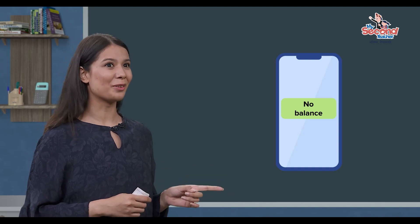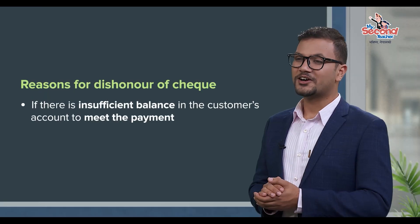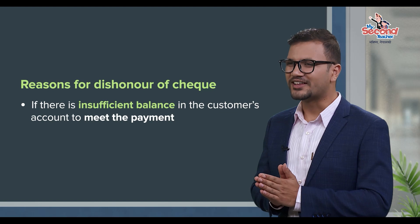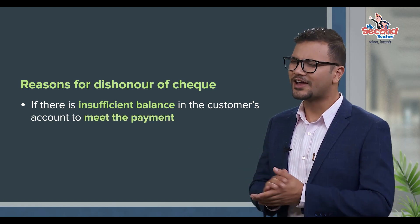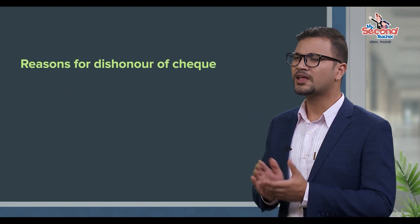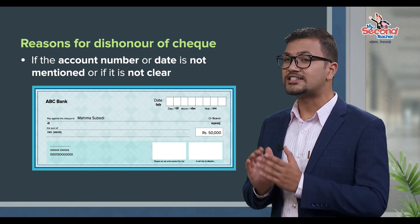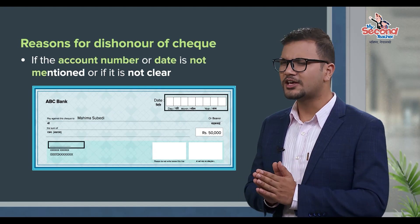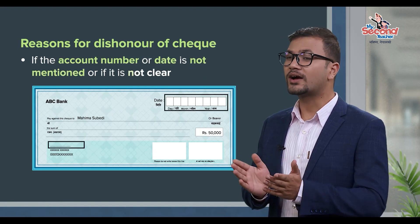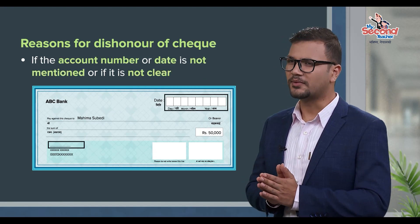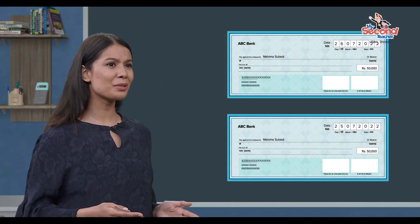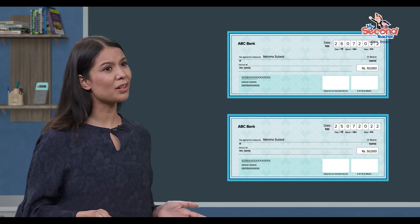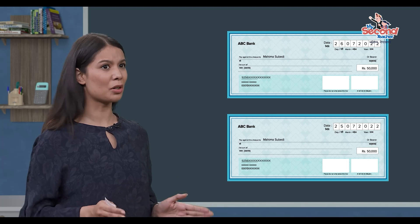In the account, there is no sufficient balance, so the check is rejected. There is also another reason for check dishonor: the account number and date. If the account number and date are incorrect, there is also a check dishonor. That's why the account number and date should not be dishonored.